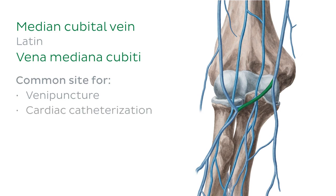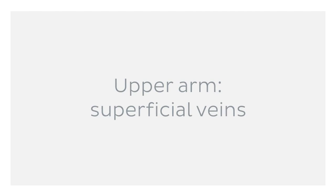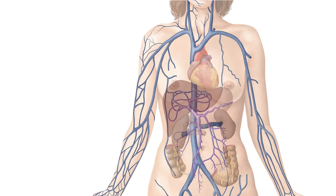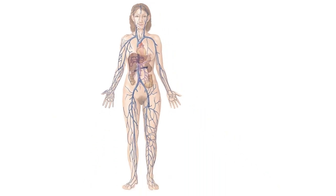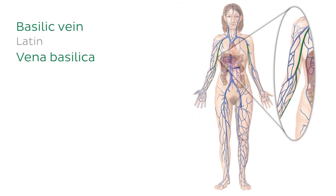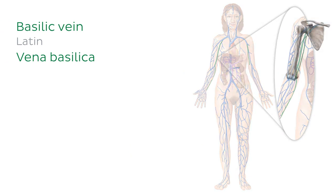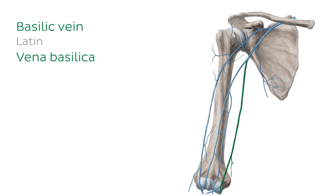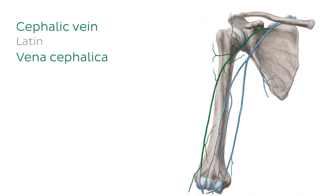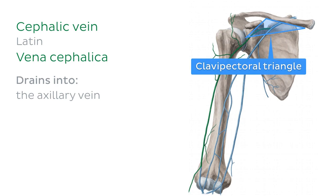We've now seen the most important deep and superficial veins of the hand and forearm. Next we move to the upper arm, starting with the superficial veins — our familiar basilic vein and cephalic vein from the forearm. The upper arm portion of the basilic vein is shorter than that of the cephalic vein and terminates where it meets the brachial vein. The cephalic vein travels right up the arm and drains into the axillary vein in an area known as the clavipectoral triangle, becoming the subclavian vein.